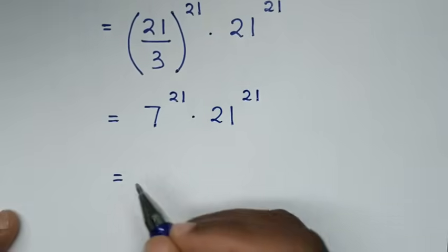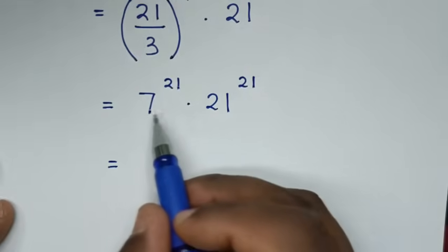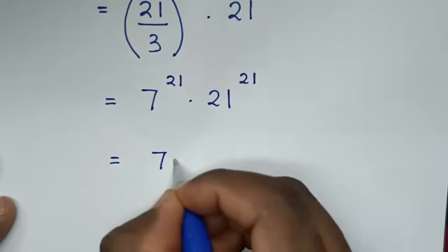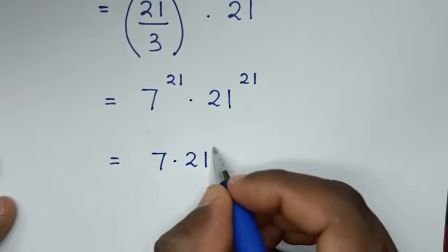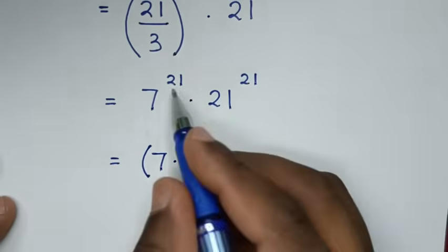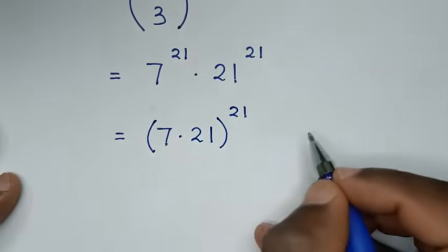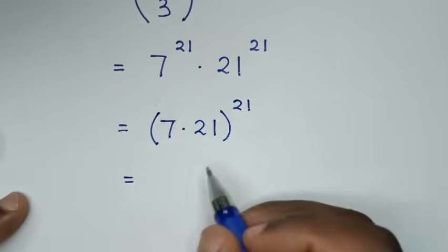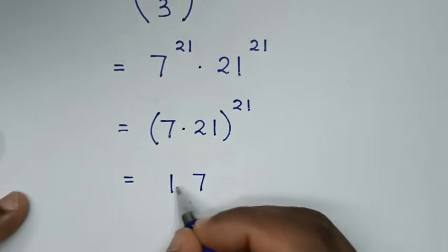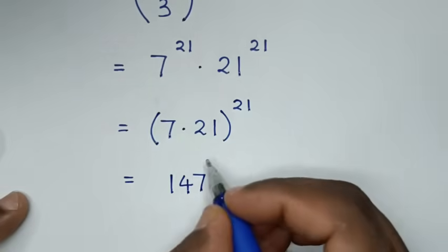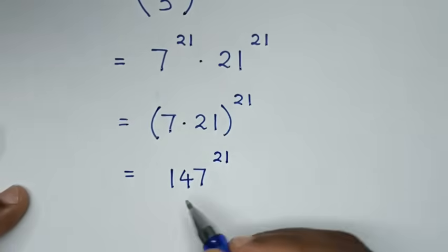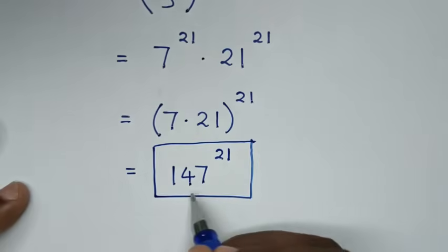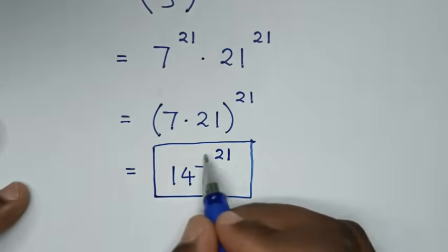So it will be equal to 7 times 21, same power of 21, then bracket — 7 times 21 is 147 — to the power of 21. So this is our final answer: 147 power of 21.